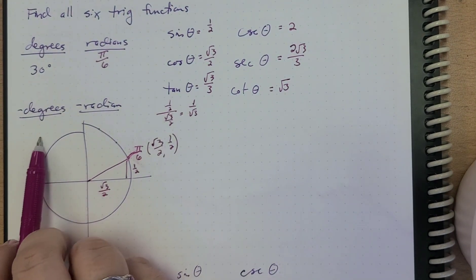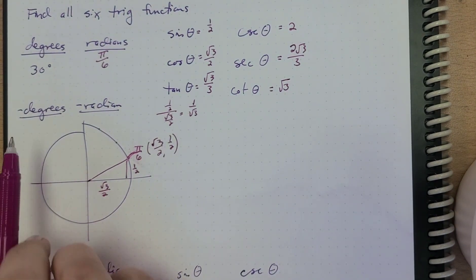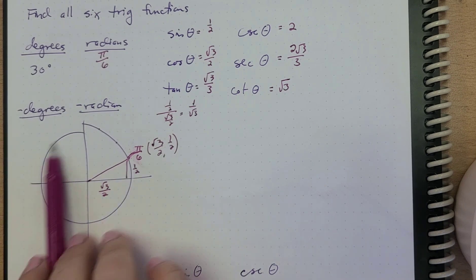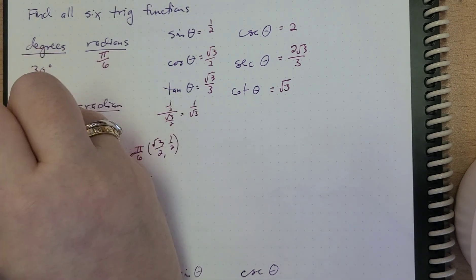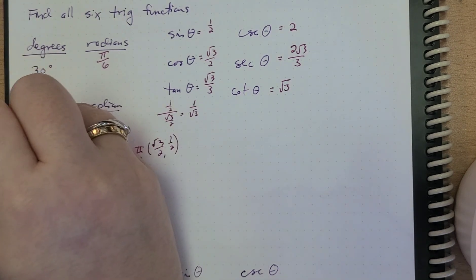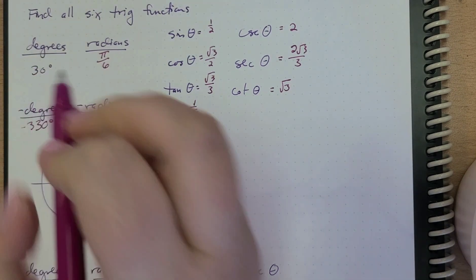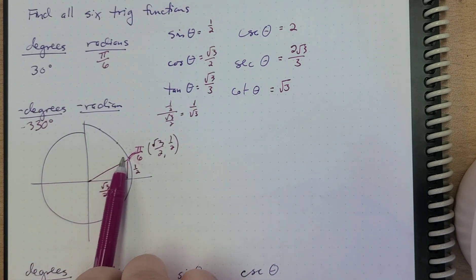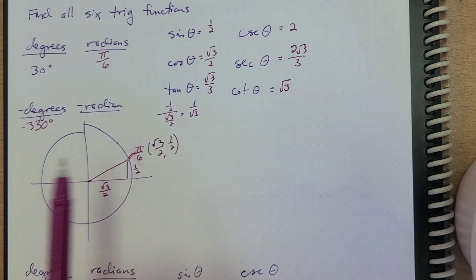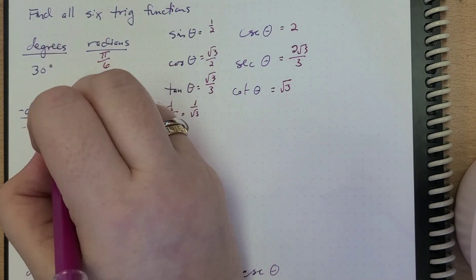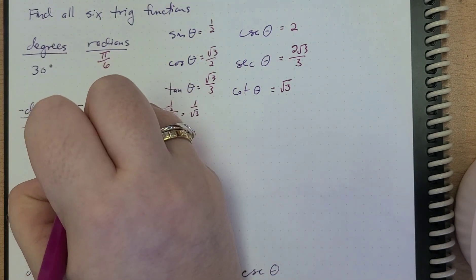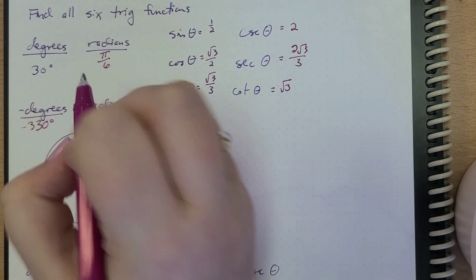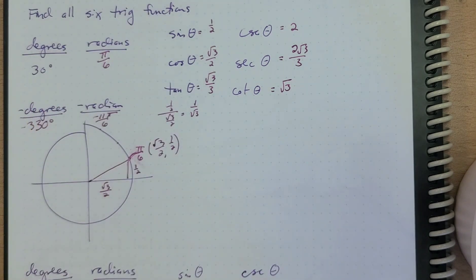Then we want to write the negative degrees. If this is 30 degrees here, for negative degrees it would be negative 330 degrees. And for negative radians, it would be negative 11π/6 radians.